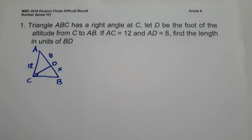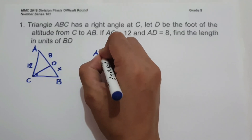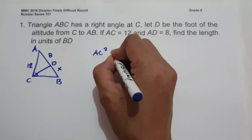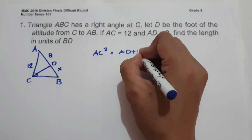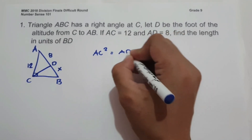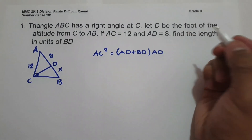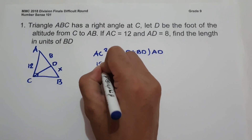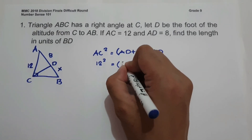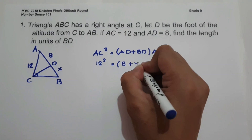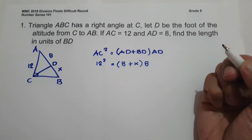We are looking for the length of BD, so we represent it as X. Since we have a similarity in a right triangle, we use: AC² = (AD + BD) × AD. So 12² = (8 + X) × 8.